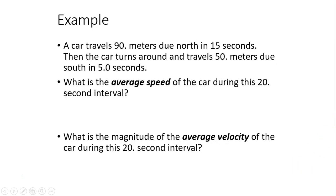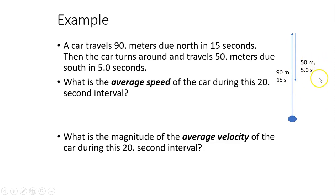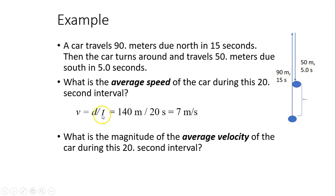A car travels 90 meters north in 15 seconds, then turns around and travels 50 meters south in 5 seconds. Drawing a picture: you travel up 90 meters, then back 50 meters, ending 40 meters north of your start. Average speed is total distance divided by total time: (90 + 50) / (15 + 5) = 140 / 20 = 7 meters per second.